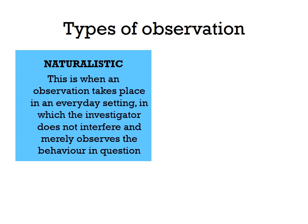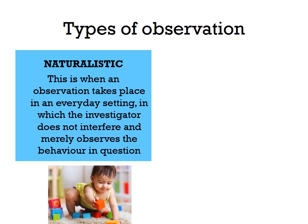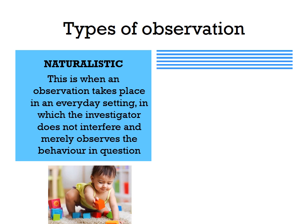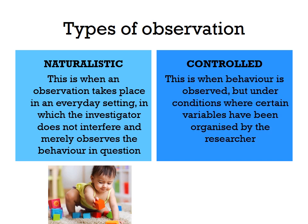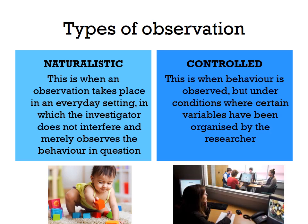A naturalistic observation takes place in an everyday setting in which the investigator does not interfere and merely observes the behaviour in question. For example, observing children's playing behaviour at home with their mom in their front room would be a naturalistic observation. A controlled observation, on the other hand, is when behaviour is observed under conditions organised by the researcher — such as in a lab observing participants through a two-way mirror in a highly controlled setting.